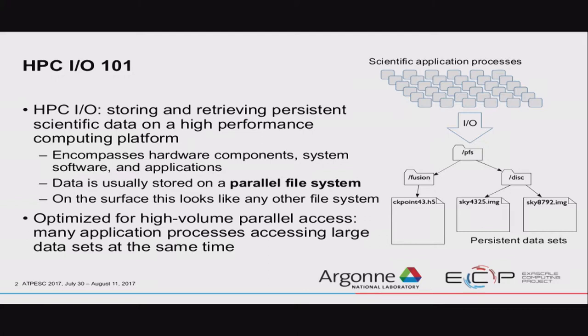Data usually ends up being stored on a parallel file system. On the systems we have, that's usually GPFS, an IBM file system, or Lustre, an Intel file system. On the surface, they look like any other file system — you get files and directories just like on your laptop — but they've been optimized in peculiar ways for high-volume parallel access. It's intended for lots of processes to access data at the same time.